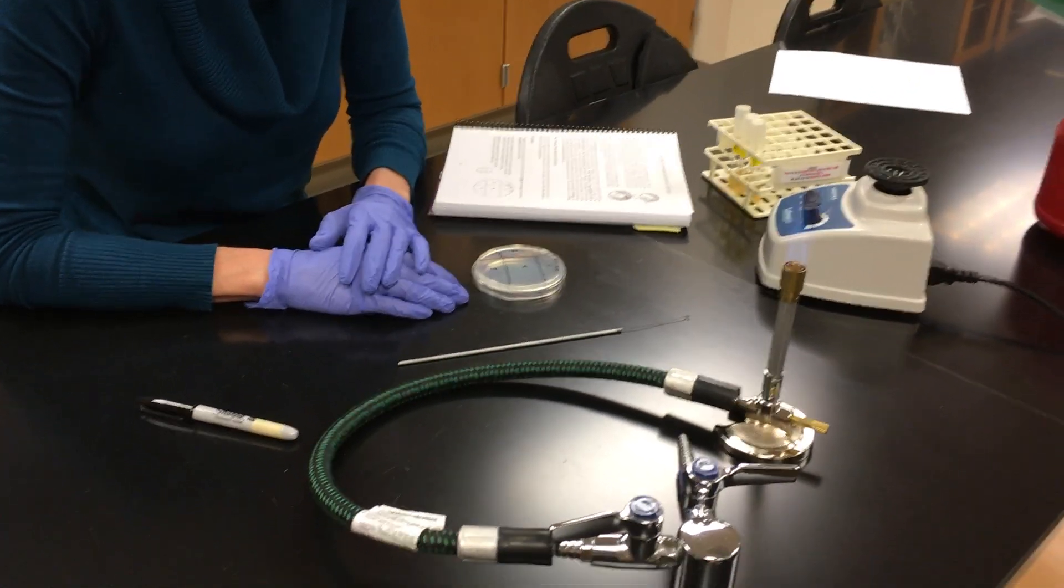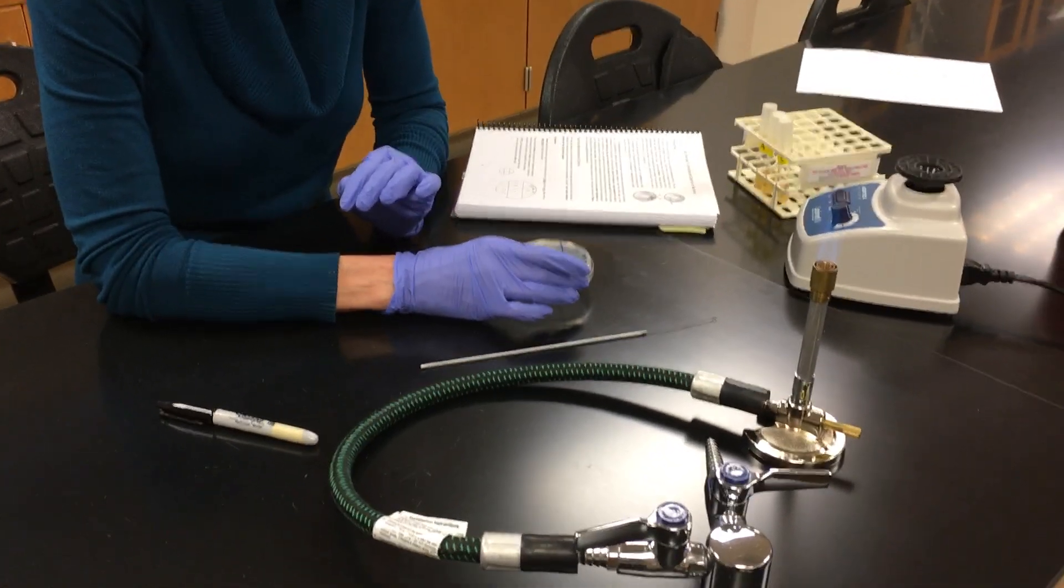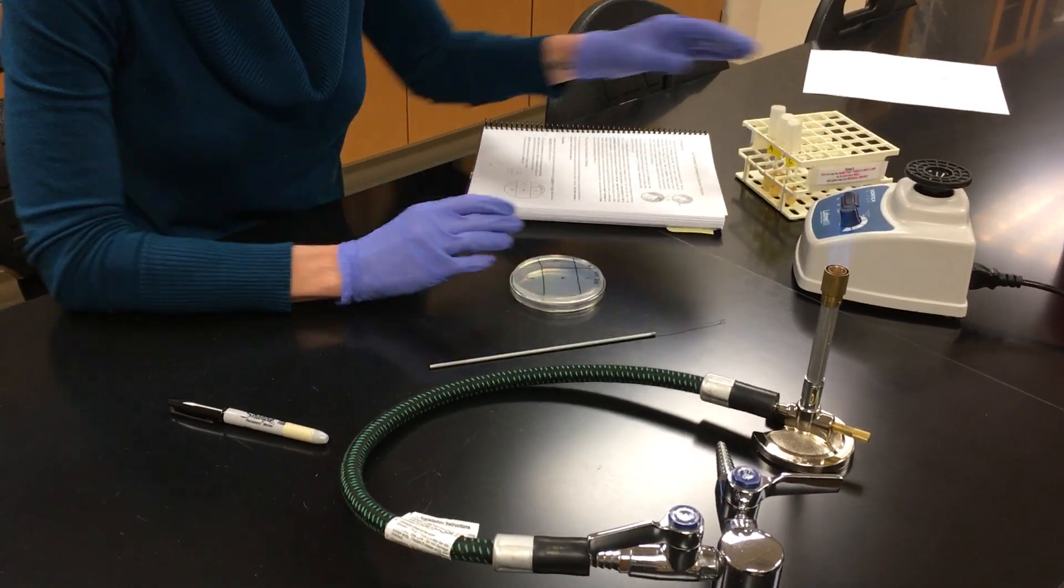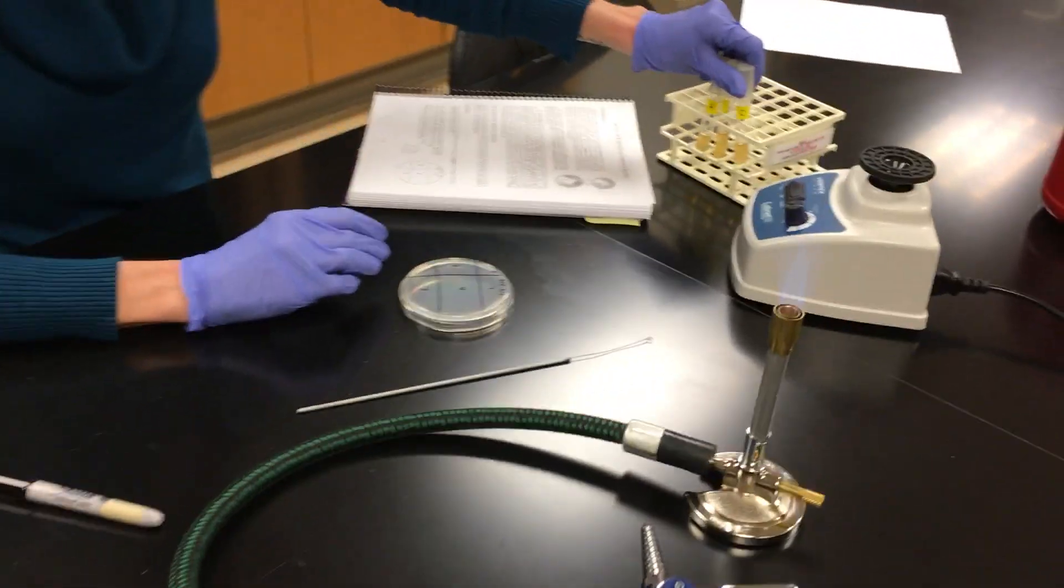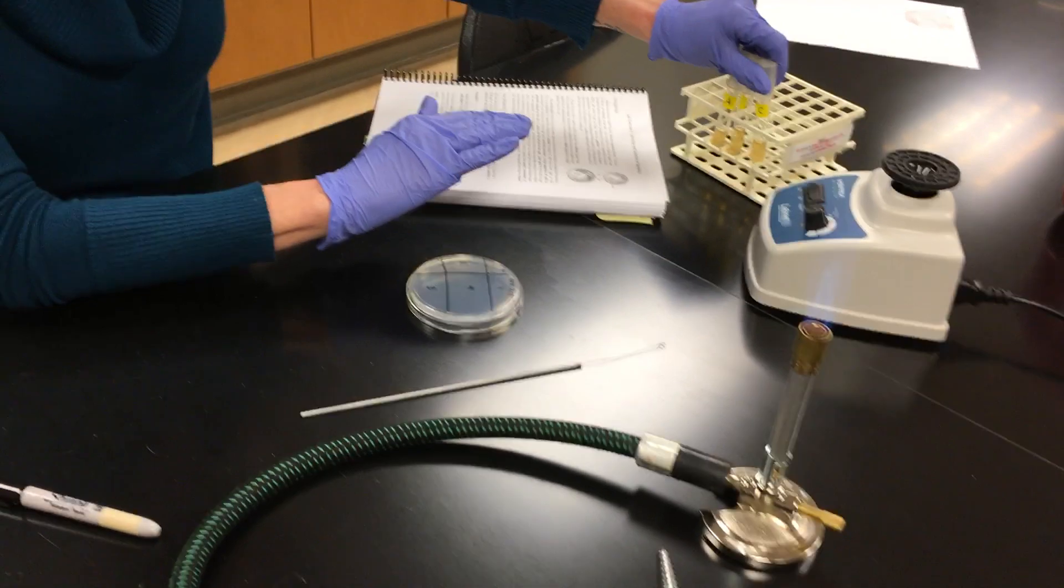Okay, so today I'm going to show you how to streak a culture plate for isolation. So today we're going to use three different mixed cultures, so they're labeled A, B, and C for you.